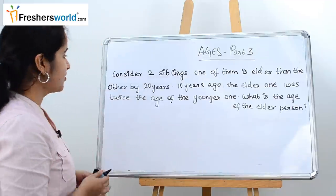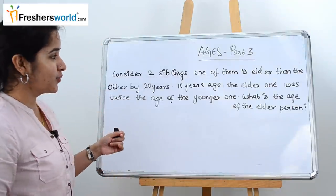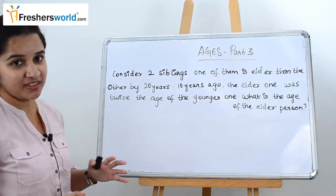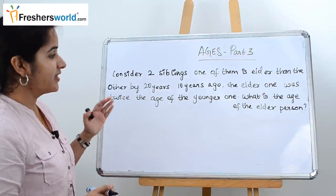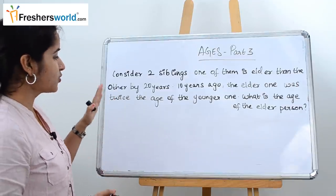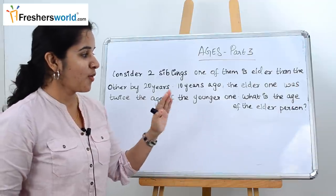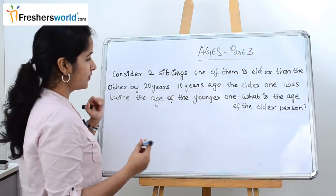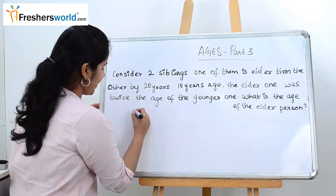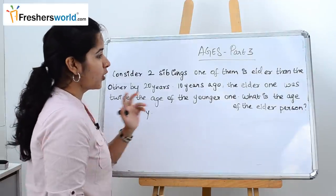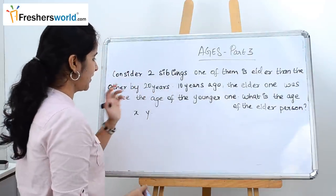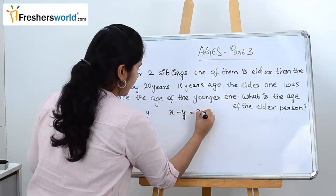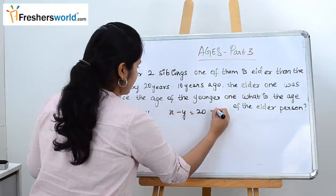Let's get started. The question given is: consider two siblings, one of them is elder than the other by 20 years. Ten years ago the elder one was twice the age of the younger one. What is the age of the elder person? So there are two siblings — let's take x and y. One of them is elder than the other by 20 years, so the first equation is x minus y equals 20.